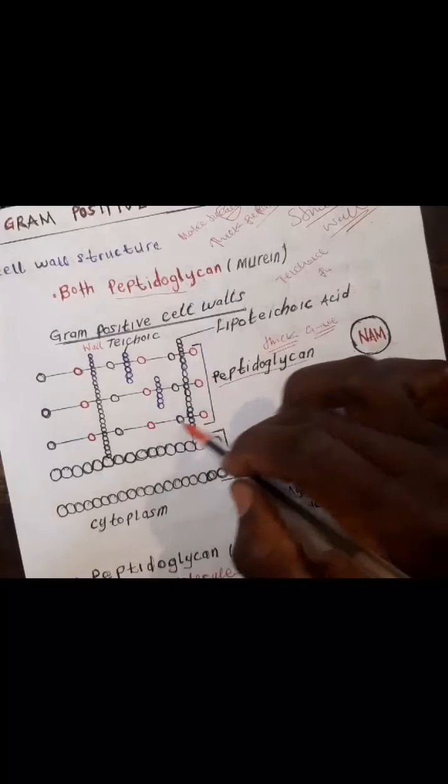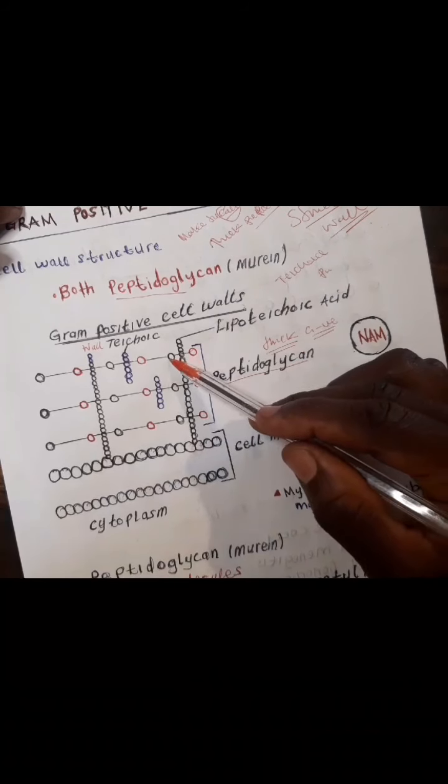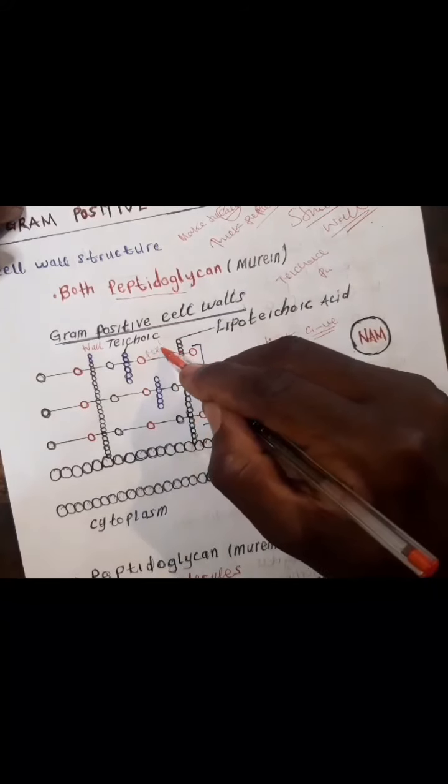The wall teichoic acid is only attached to the peptidoglycan layer. What differentiates gram-positive from gram-negative bacteria is the peptidoglycan layer. The peptidoglycan layer for gram-positive is very thick compared to that of gram-negative bacteria. The peptidoglycan is made up of sugar molecules and amino acids connected together by peptide bonds.